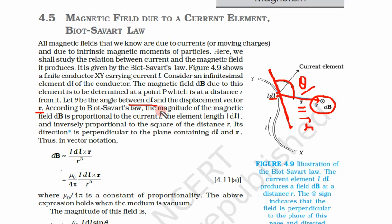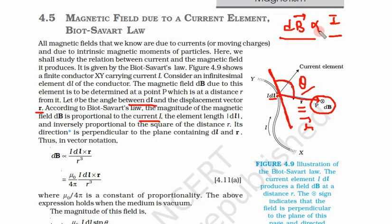According to Biot-Savart's law, the magnetic field dB is proportional to current I — more the current, more the magnetic field. It is also proportional to the element length DL. If the element size increases, its magnitude becomes bigger and the magnetic field increases. So dB is proportional to both I and DL.